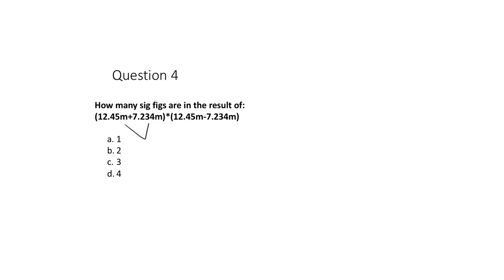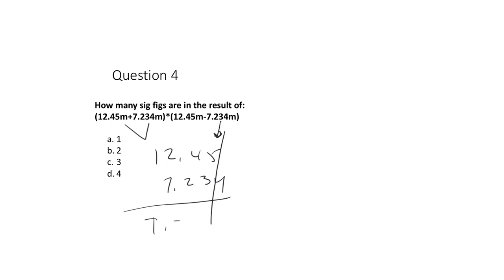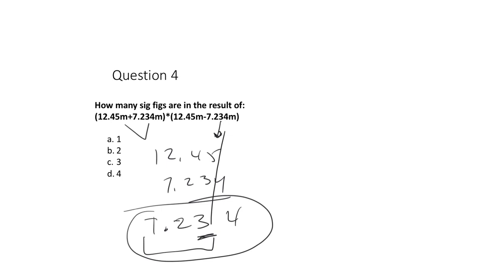Question four: how many sig figs are in the result of this arithmetic? We apply the addition rule when we add these two numbers. Lining up 12.45 plus 7.234 — we round to the highest placeholder, which is the hundredths place. So I round 7.234 to 7.23. I might note this has three sig figs and I can either round now or carry the extra digit and keep going.